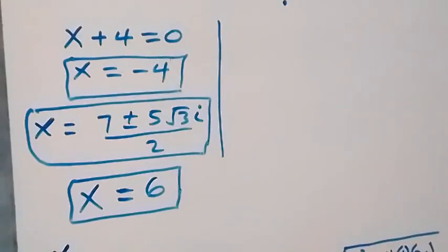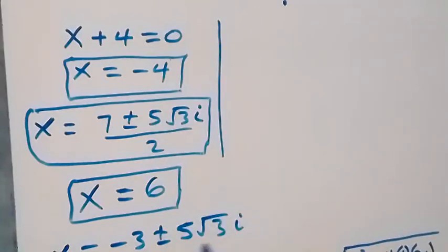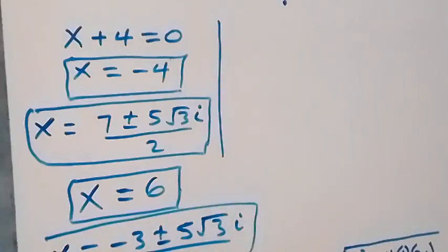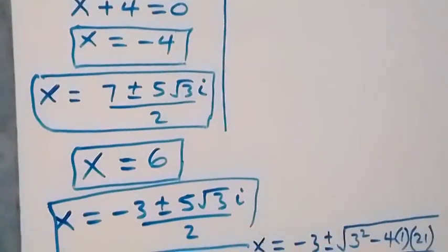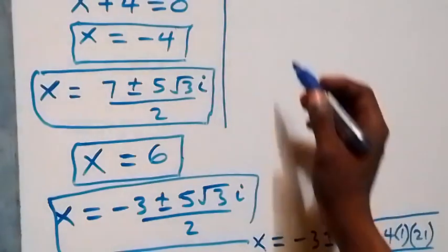This gives x equals minus 3 plus or minus 5 root 3i, over 2, which are two other complex solutions. So altogether we have two real solutions and four complex solutions.